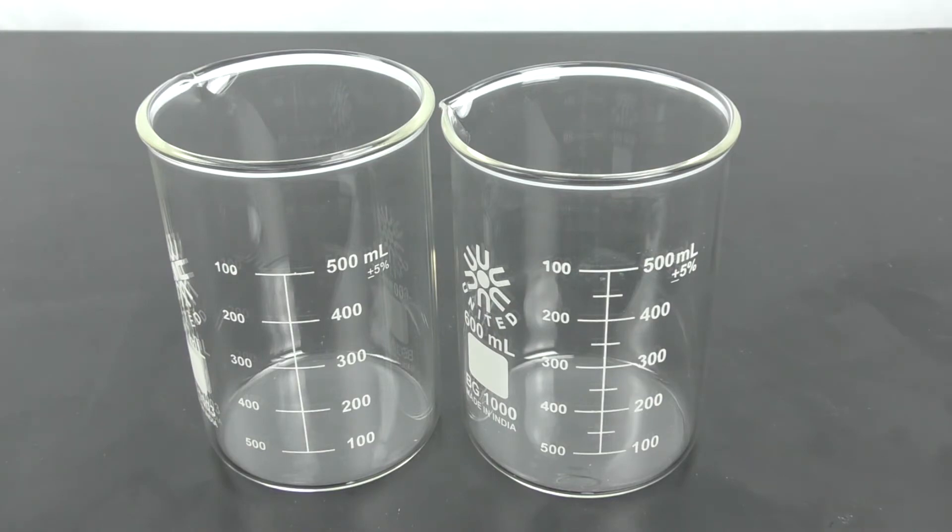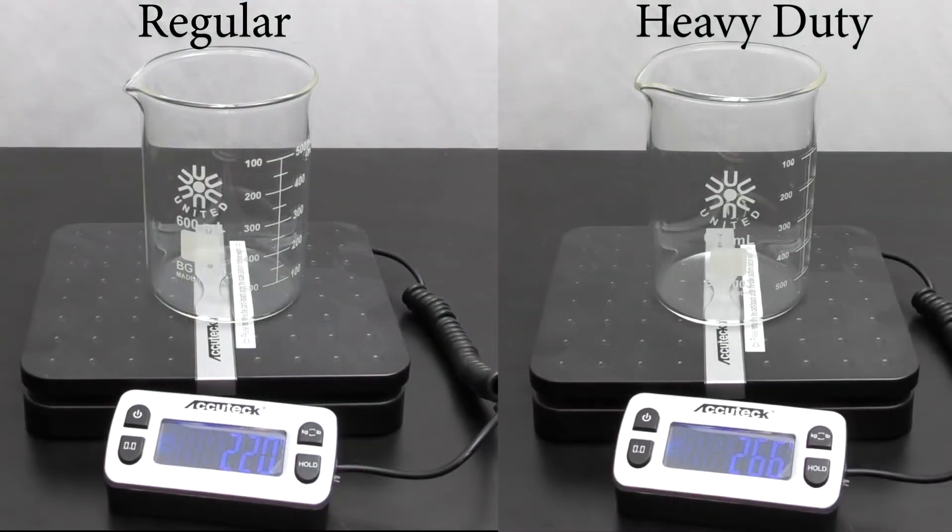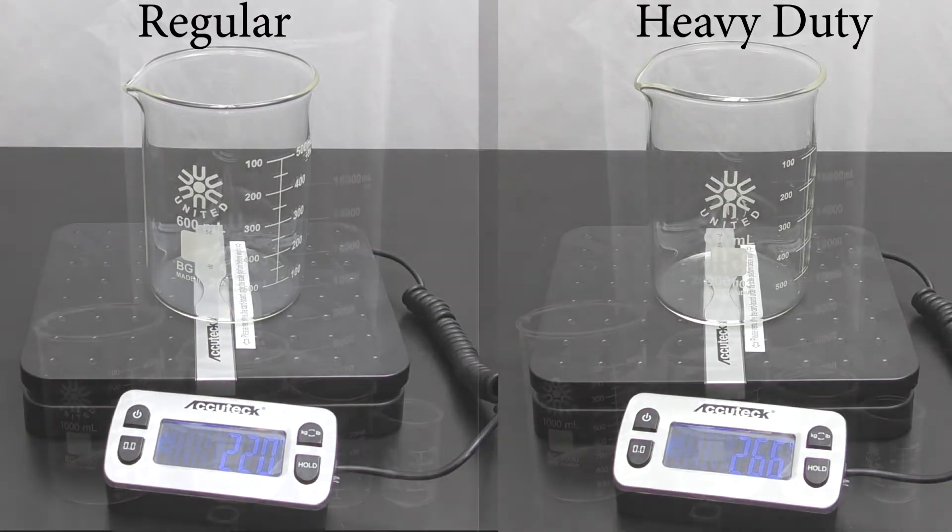As an example, here are the weights of two equal volume beakers where one is a heavy duty and one is a normal beaker.